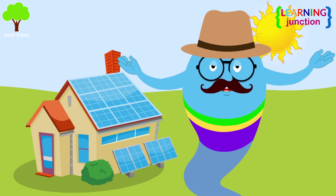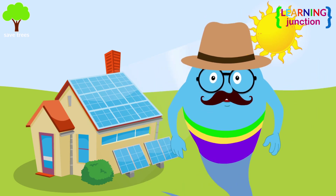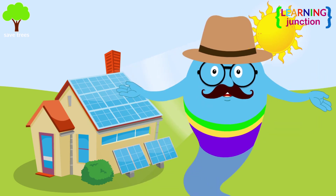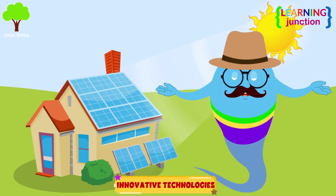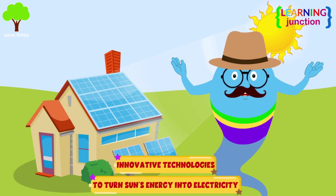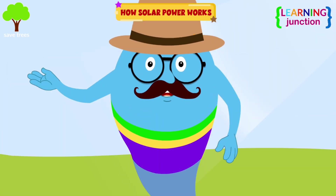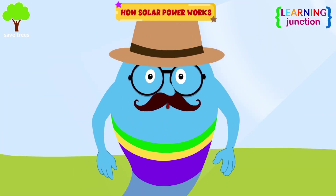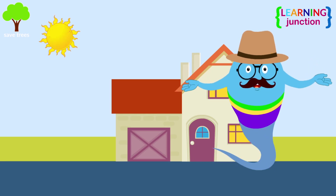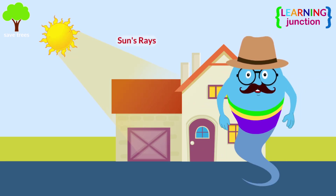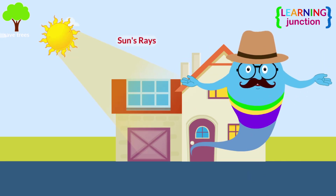Fast forward to today, societies around the world have developed innovative technologies that allow us to turn the sun's energy into electricity. Let's see how solar power works. Solar power works by taking the sun's rays and converting them into electricity.